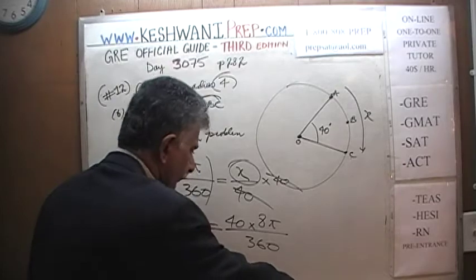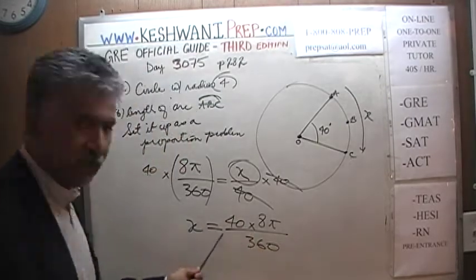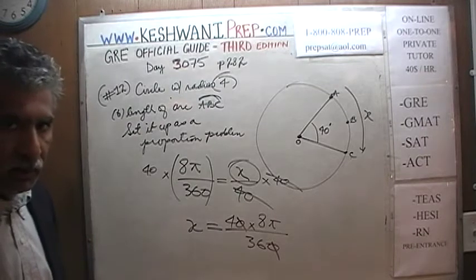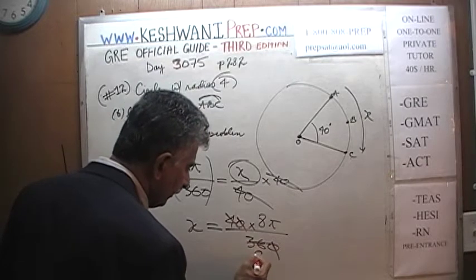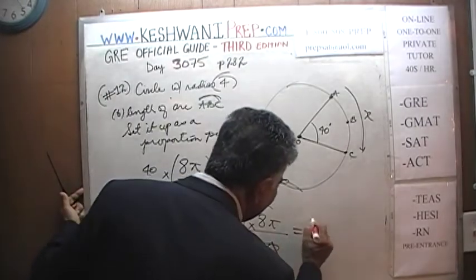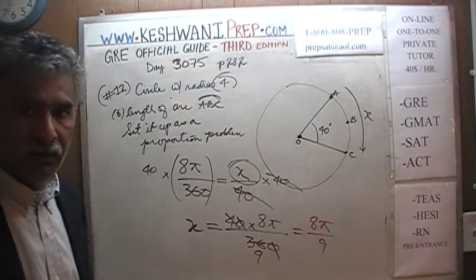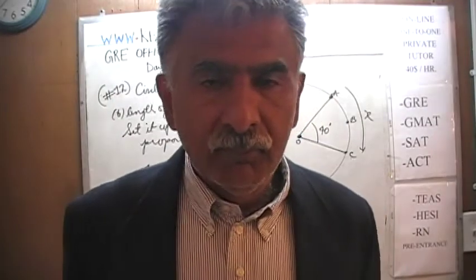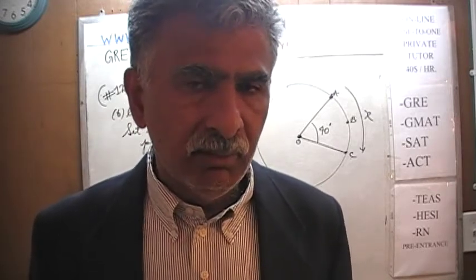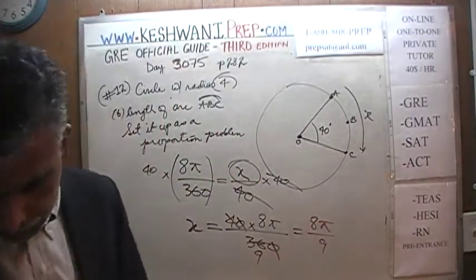At this point we use the 4 to reduce: 36 is made up of 9 fours. What we notice is that the distance we're looking for is 1/9 of the circumference. Of course it's 1/9 because 40 degrees is a 9th of 360 — 40 times 9 is 360. So 40 degrees represents a 9th of a circle, and therefore the length of the arc will be 1/9 of the circumference. That gives us 8 pi over 9.